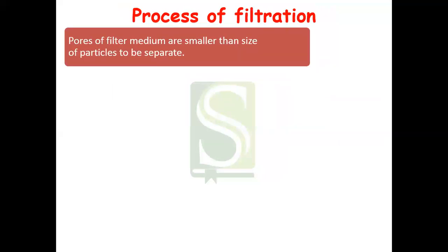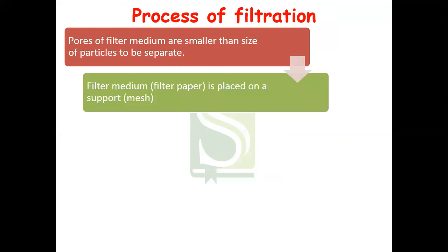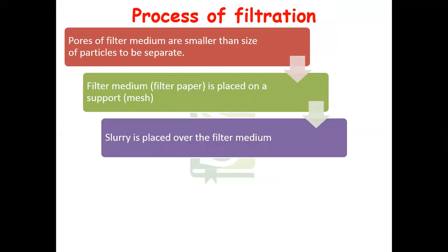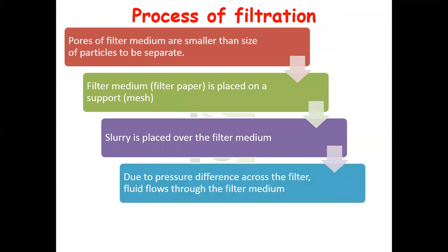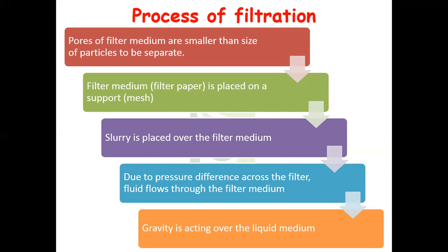Now let us see the process of filtration. Whenever we carry out filtration, we should make sure that the pores of the filter medium are smaller than the size of the particles to be separated. The filter paper or filter medium is placed on a support or mesh, then the slurry is passed over the filter medium. Due to the pressure difference across the filter, fluid flows through the filter medium, and gravity acts over it, completing the process of filtration.